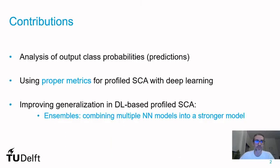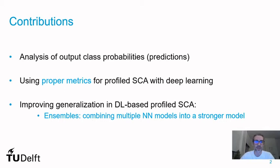We have three main contributions in this work. First is the analysis of output class probabilities — the predictions. Second is how to use proper metrics for profiled SCA with deep learning. And third, how to improve generalization in deep learning-based profiled SCA by using ensembles, which are basically a combination of multiple neural network models into a stronger model.